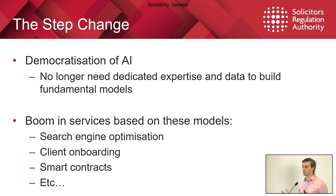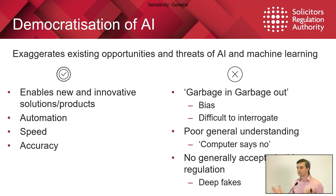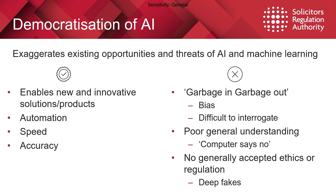I sit in the research team at the SRA and we ask ourselves: what does all this mean for the SRA, for the legal sector, for regulation, for society as a whole? And this democratisation point — we always come back to the same slightly tired pros and cons of AI that we've probably all heard for years. There are really cool products and exciting stuff coming that will change the way we work, with all the classic benefits of automating procedures — speed, accuracy of information. The cons: we've all heard of bias in models. Garbage in, garbage out is a phrase in data science — if your data are rubbish, your model will be rubbish; if your data are biased, your model will be biased.